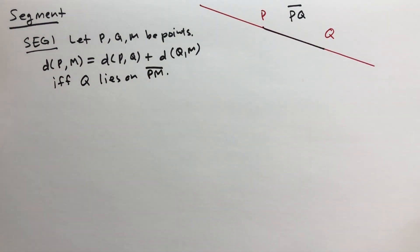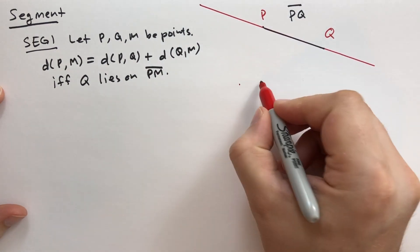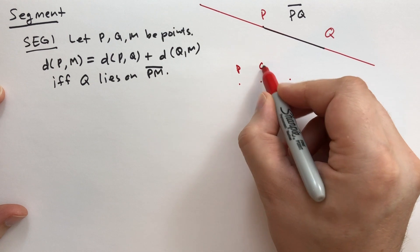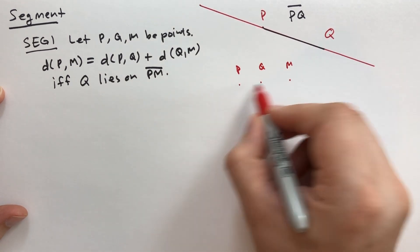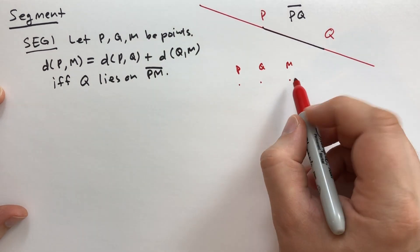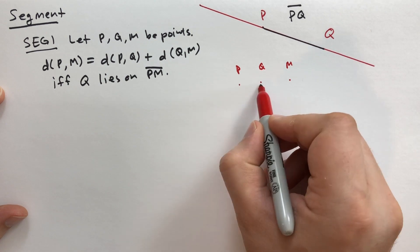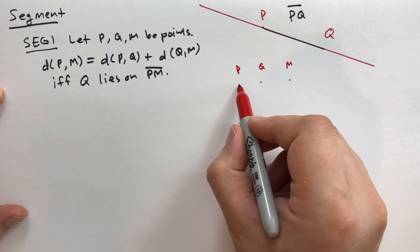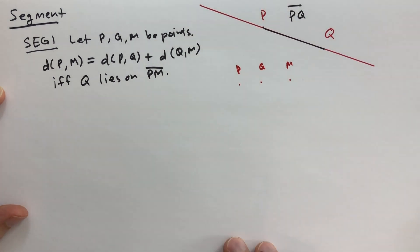So this is saying basically that when you have three points in a line, P, Q, M, and that point in the middle is between P and M because it's on the segment, then the distance between P to Q and the distance from Q to M is the same as the distance from P to M. It's all the same.